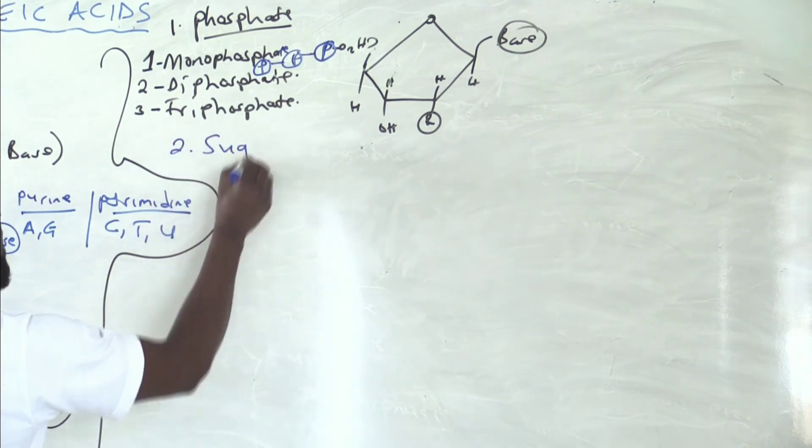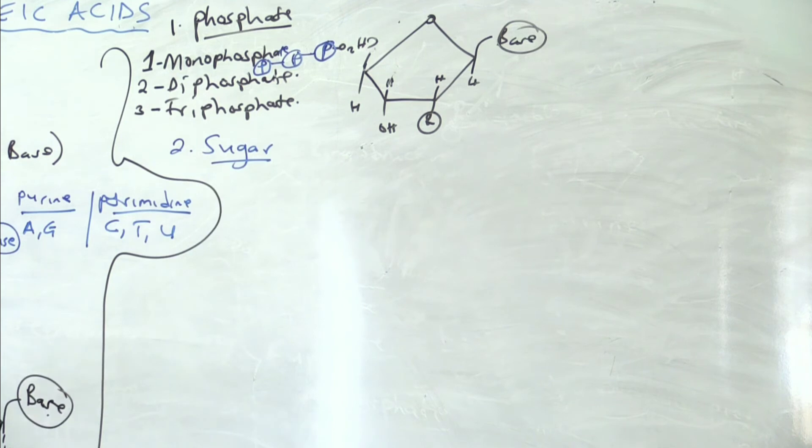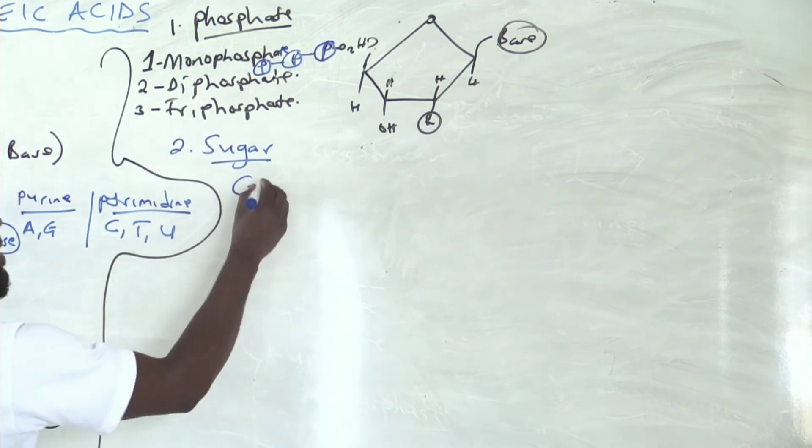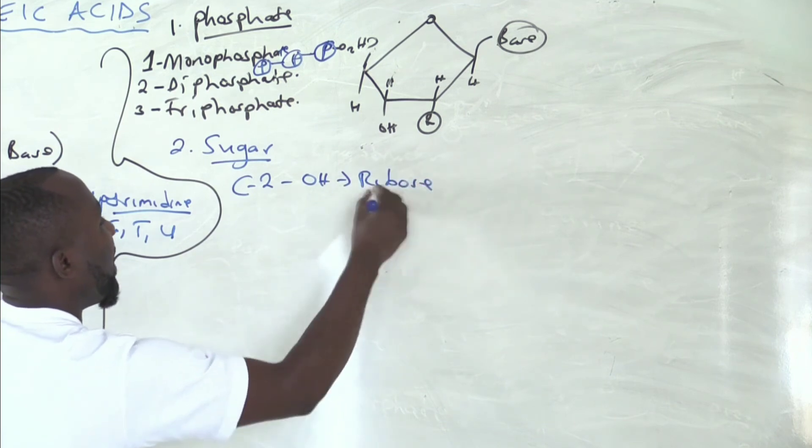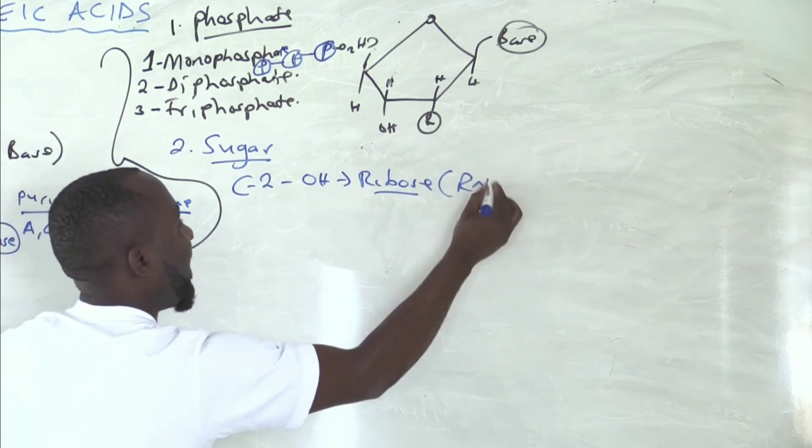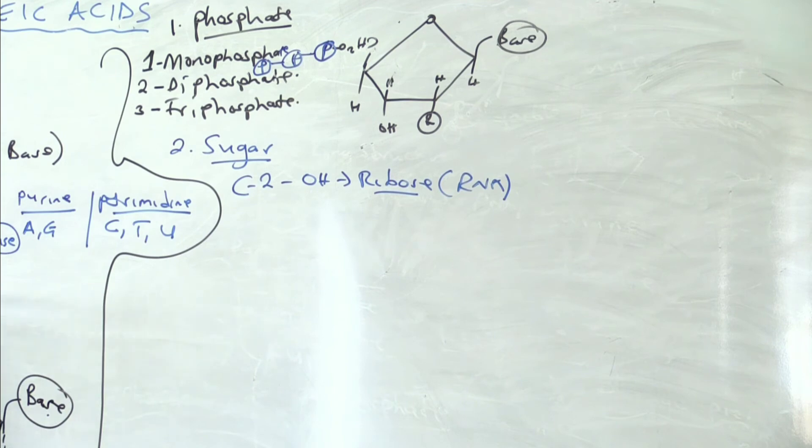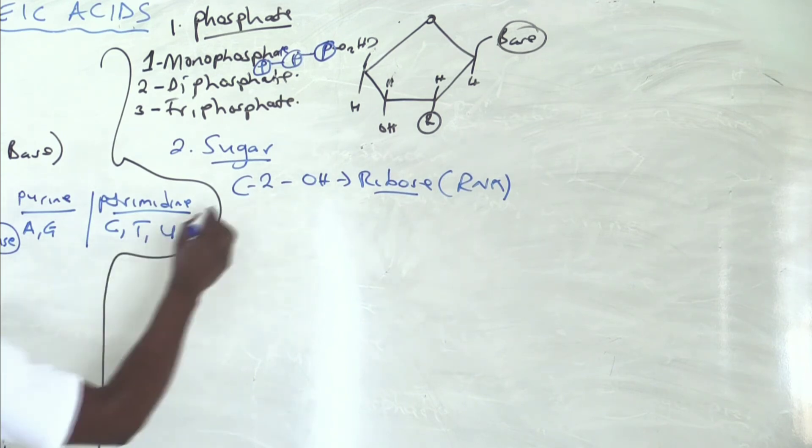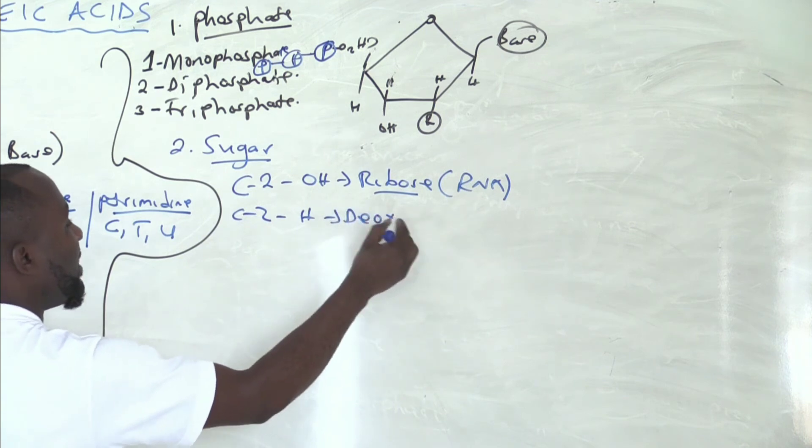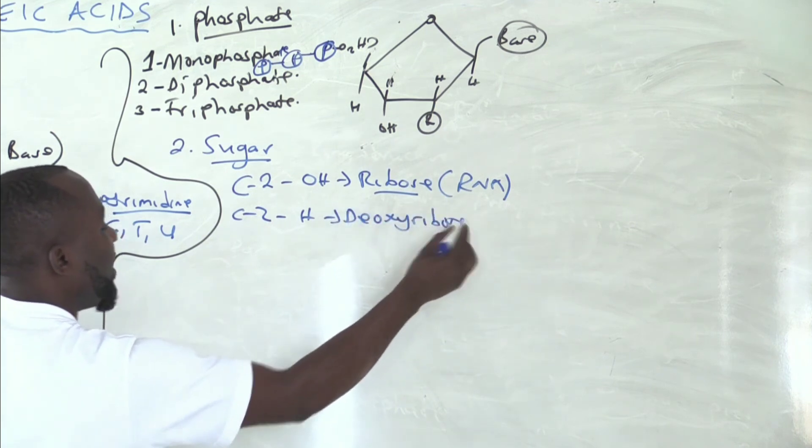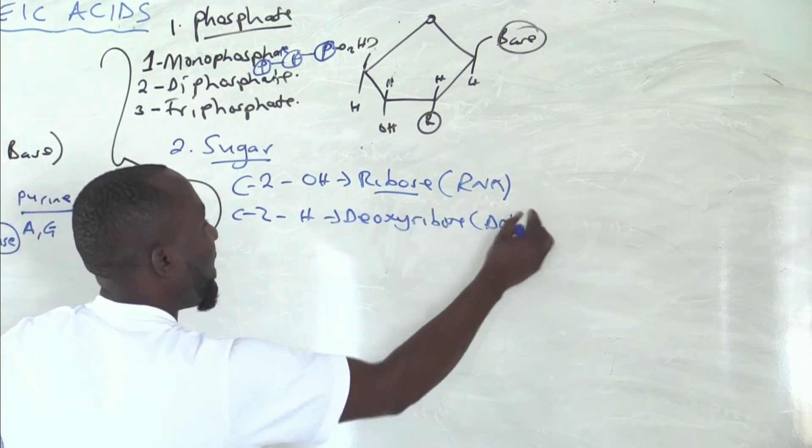Number two, let us go to the sugar. What did I say about the sugar? If on carbon number two you put OH, then the name of the sugar is ribose sugar, which is used to make RNA. That is here on carbon number two. If on carbon number two you attach H, then the name of the sugar is deoxyribose, and you are using it to make DNA. That's all.